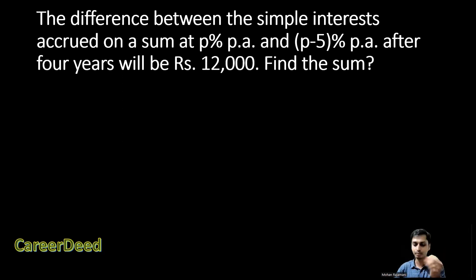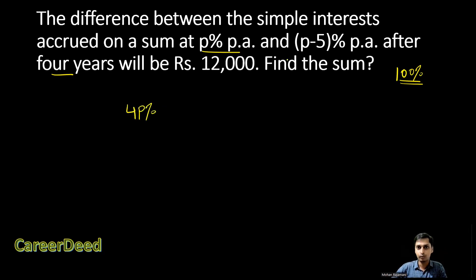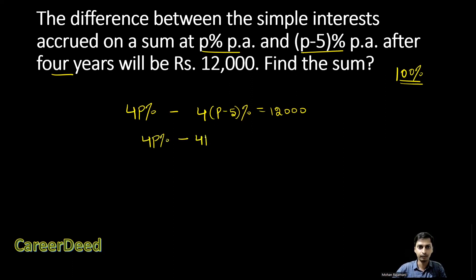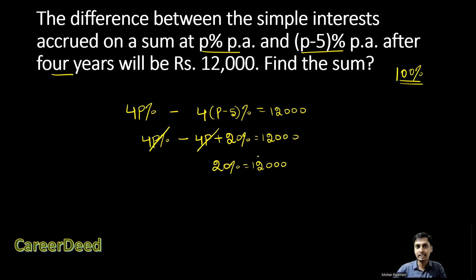The sum is the principal amount, which is always 100%. Now for one year it is p%, for four years it is 4p%. The difference is given as 12,000 rupees. So: 4p% − 4(p−5)% = 4p − 4p + 20 = 20%. The +4p% and −4p% cancel, leaving 20% equivalent to 12,000 rupees. So the 20% difference in rate corresponds to 12,000.